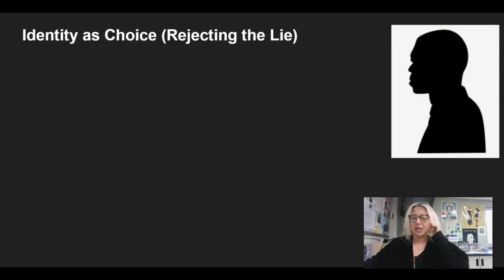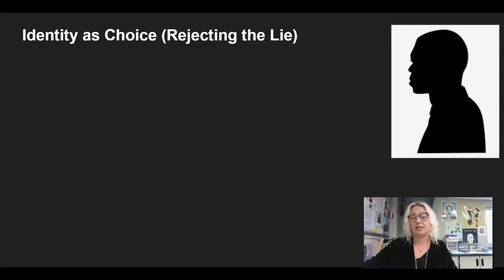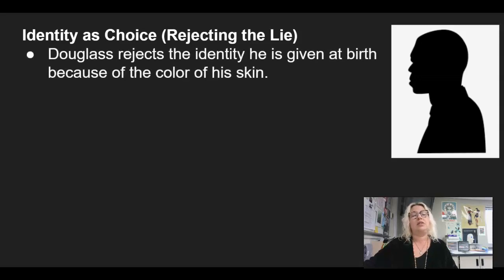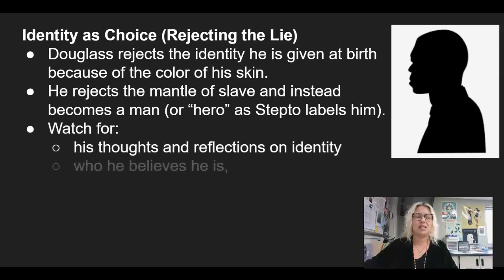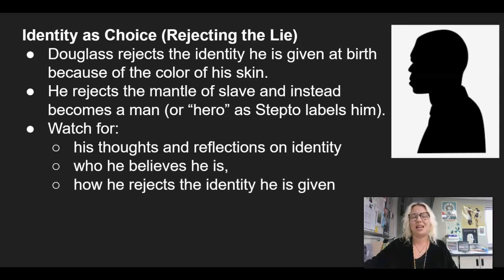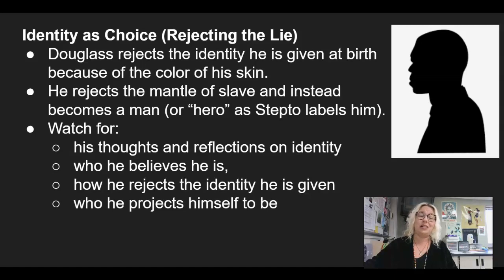Identity as choice is the last of the four themes, and another way to name this one would be rejecting the lie. Douglass rejects the identity he has been given and he considers that a lie — he does not consider that his true identity. So he instead becomes a man, he will explain to us later in the book. He becomes a hero as he rejects the mantle of a slave and instead dons the mantle of a heroic man. Watch for his thoughts and reflections on identity, who he believes he is, how he rejects the identity he is given, who he projects himself to be, and how others see him because of that projection.